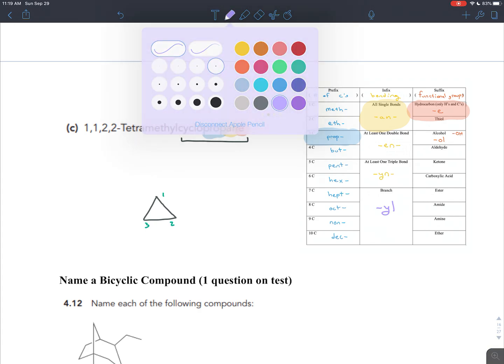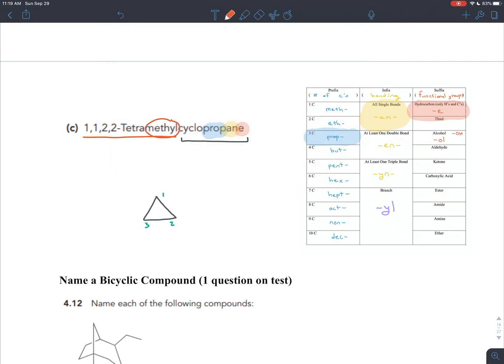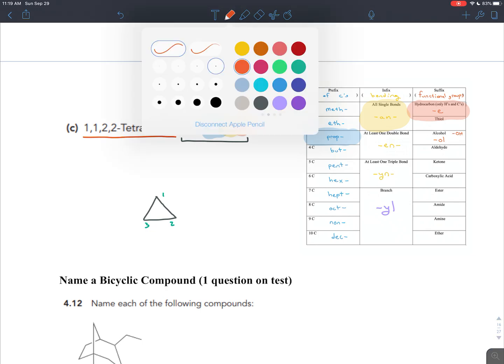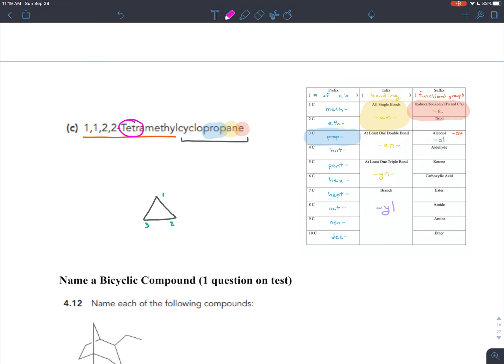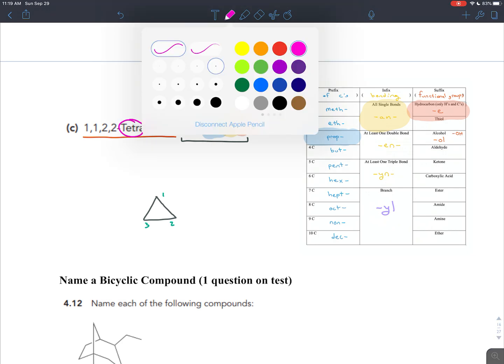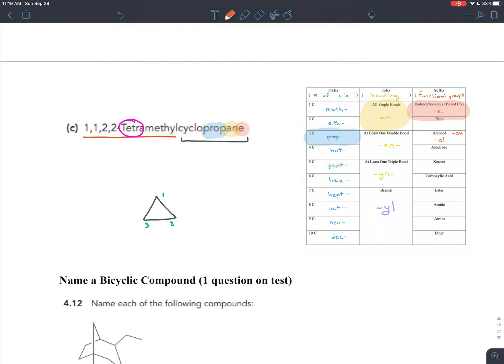In terms of branches, we only have one type of branch. The type of branch is the methyl branch. We have four of them though. That prefix four tells us how many methyl branches we have. And they're coming off of the numbers that we see at the left. So one methyl branch will be coming off of carbon number one. Another methyl branch will also be coming off of carbon number one. A methyl branch will be coming off of carbon number two. And another methyl branch will be coming off of carbon number two. So that would be 1, 1, 2, 2 tetramethyl cyclopropane.